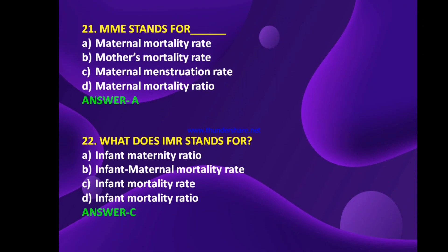MMR stands for maternal mortality rate, mother's mortality rate, maternal menstruation rate, or maternal mortality ratio? The answer is A — maternal mortality rate. What does IMR stand for — infant maternity ratio, infant maternal mortality rate, infant mortality rate, or infant mortality ratio? The answer is C — infant mortality rate, known as IMR.